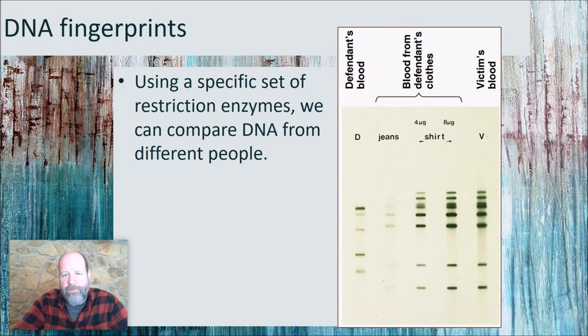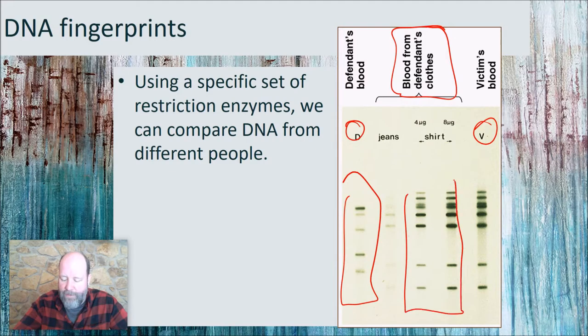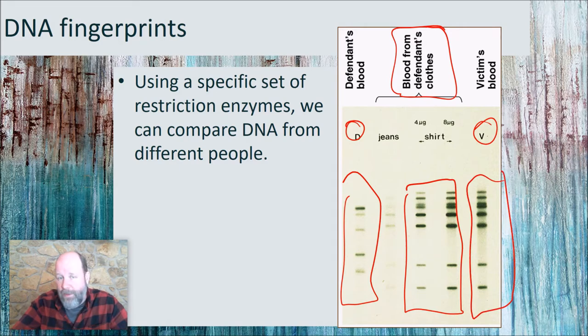Here's a picture of a gel from an actual crime scene. This is blood from the defendant's clothes. And this is the victim's blood. This is the defendant's. The defendant claimed that the blood was his own, but you can see here's his DNA. And here's the DNA that was on his shirt. And it's not the same and it matches the victims perfectly. So you have the victim's blood on your clothes. That seems suspicious.